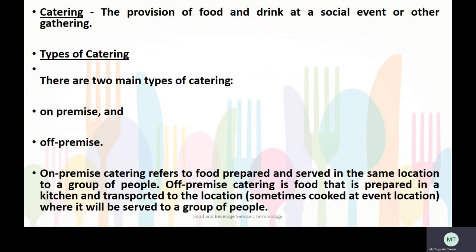The next terminology is catering — the provision of food and drink at a social event or other gathering. There are two main types of catering: on-premise catering and off-premise catering. On-premise catering refers to food prepared and served in the same location. Off-premise catering is food prepared in a kitchen and transported to the location, or sometimes cooked at the event location, where it will be served to a group of people.